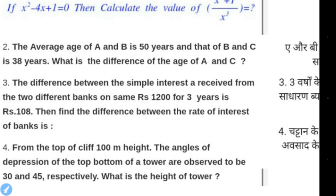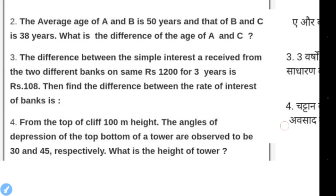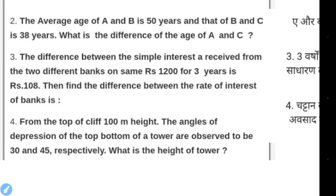SI1 equals P into R1 into 3 divided by 100, and SI2 equals P into R2 into 3 divided by 100. Use these two simple interest formulas and the given difference to find the difference in rates.